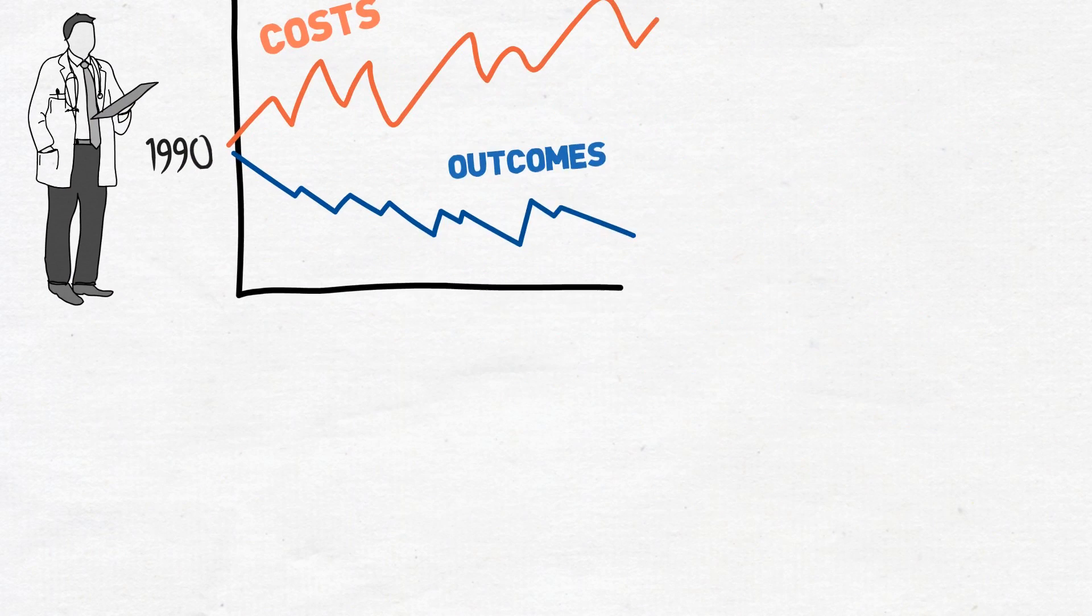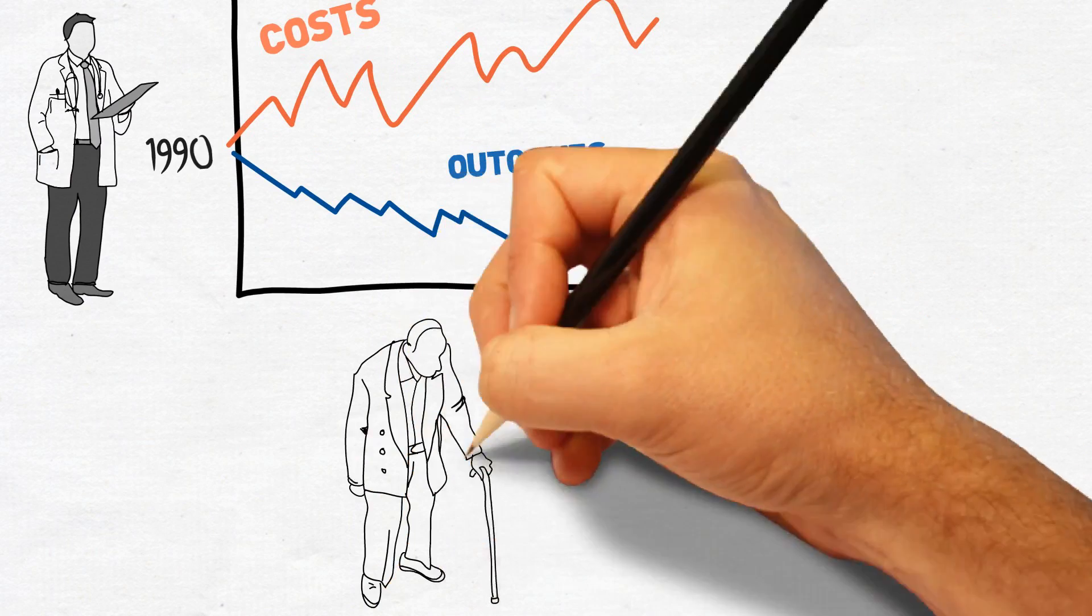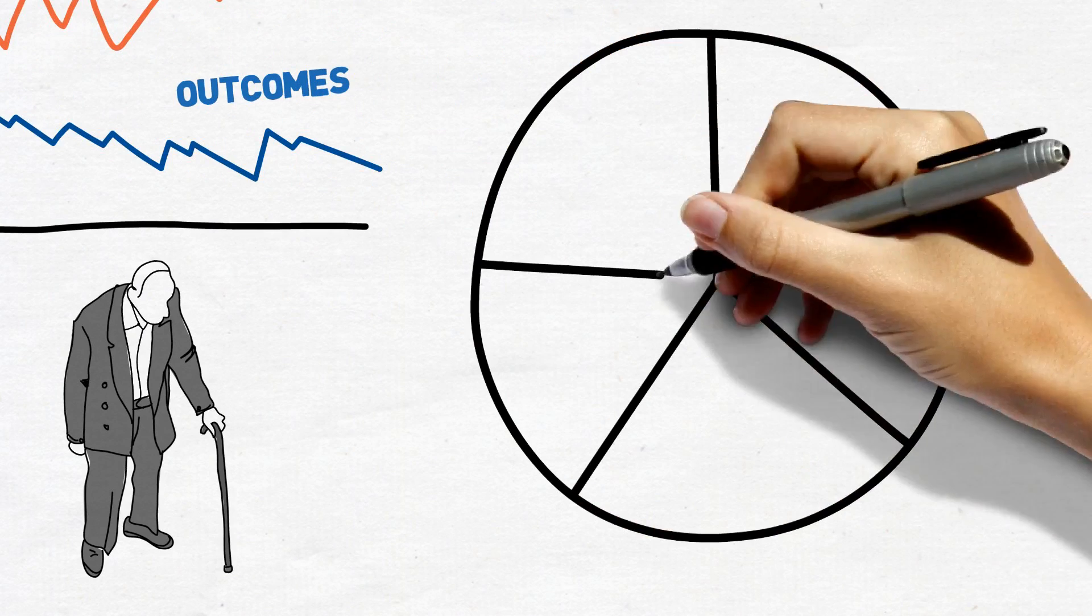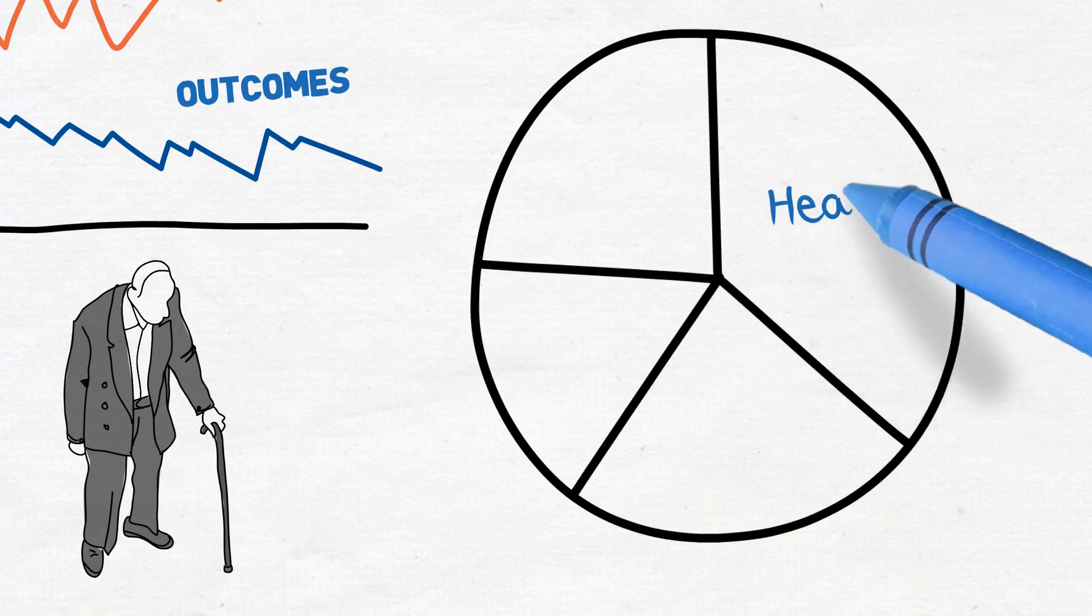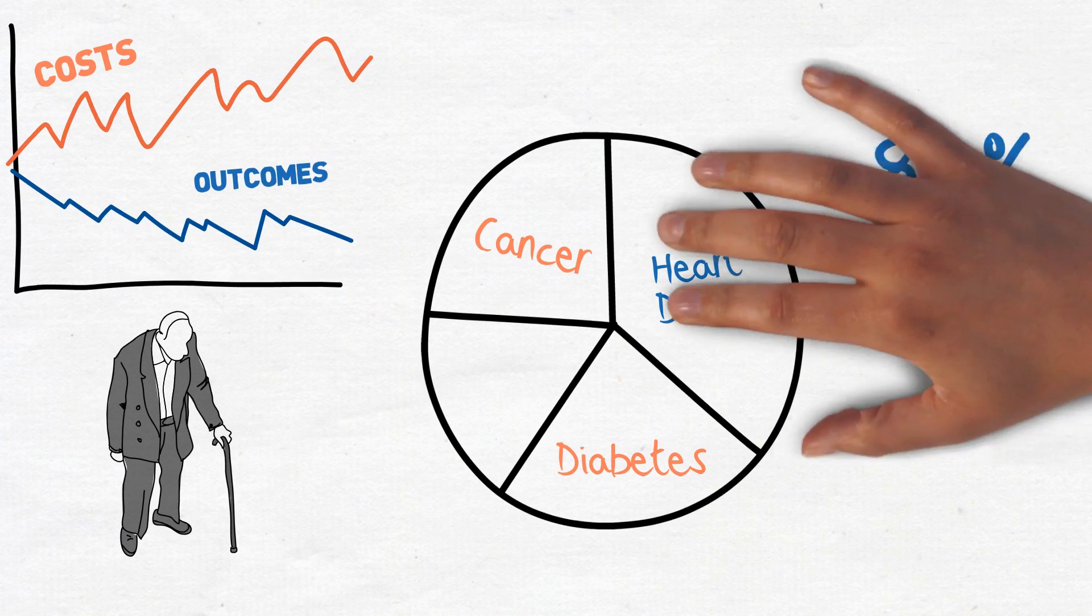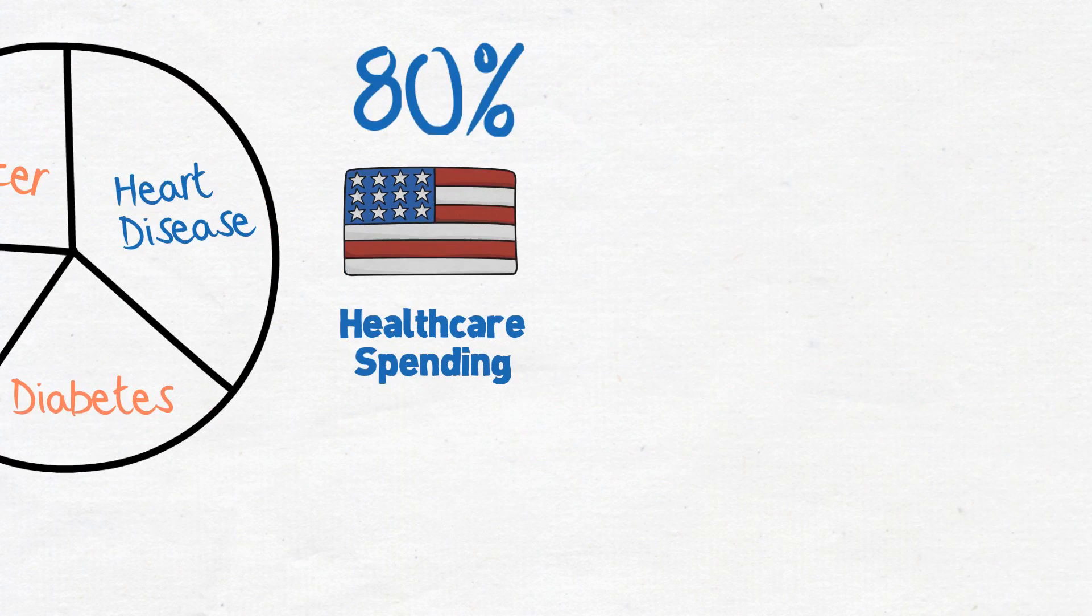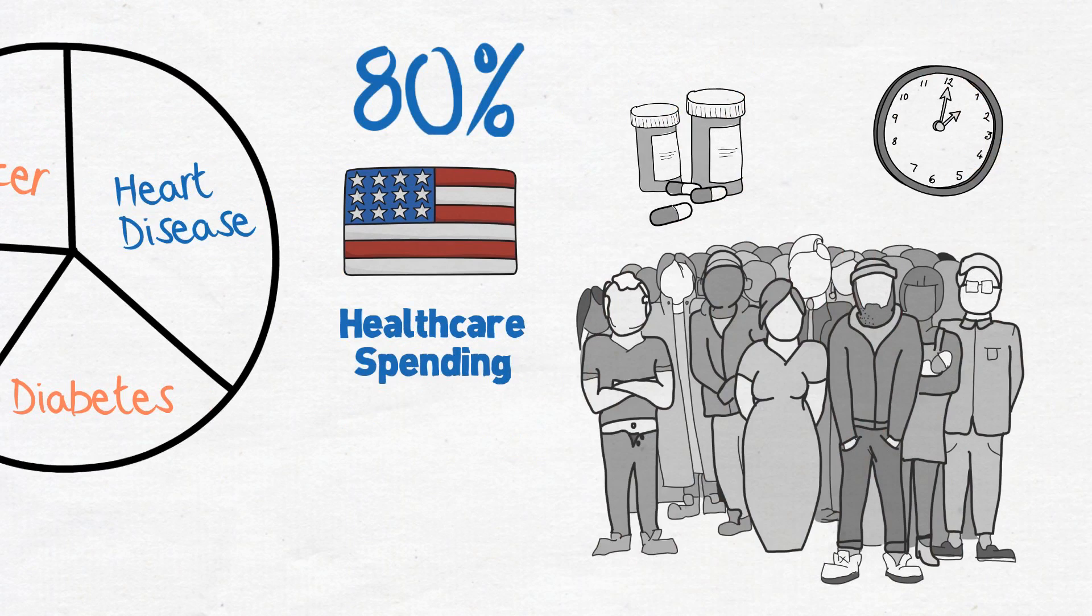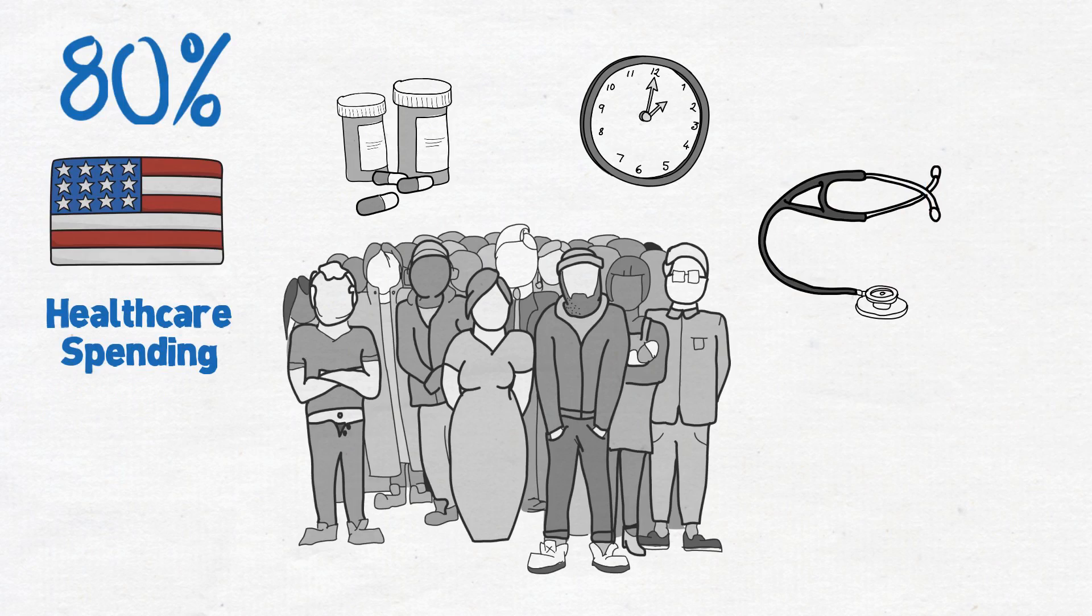A few things are contributing to this. We have a large aging population and higher life expectancy, and a significant portion of our population is managing one or more chronic illnesses. Heart disease, diabetes, and cancer account for 80% of America's health care spending. So we have more people, sicker people, living longer and requiring treatment over a longer period of time.